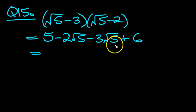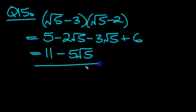So, numbers-wise, 5 plus 6 is 11. Take away 2 root 5, take away 3 root 5. In total, you're taking away 5 root 5. 11 minus 5 root 5.